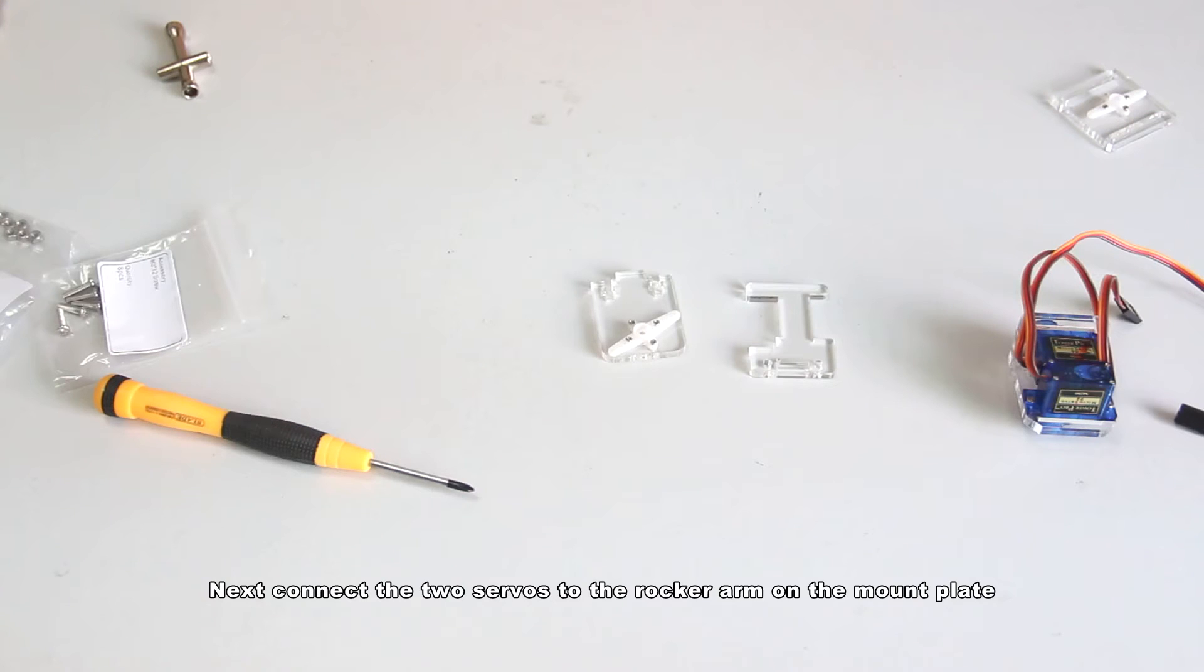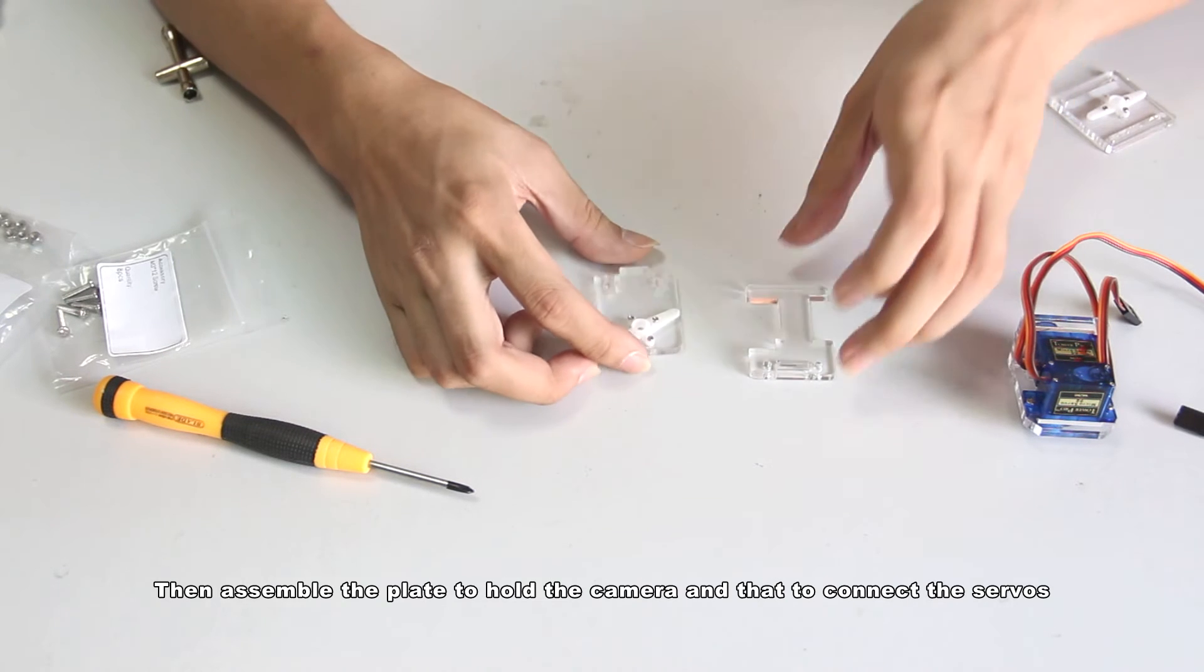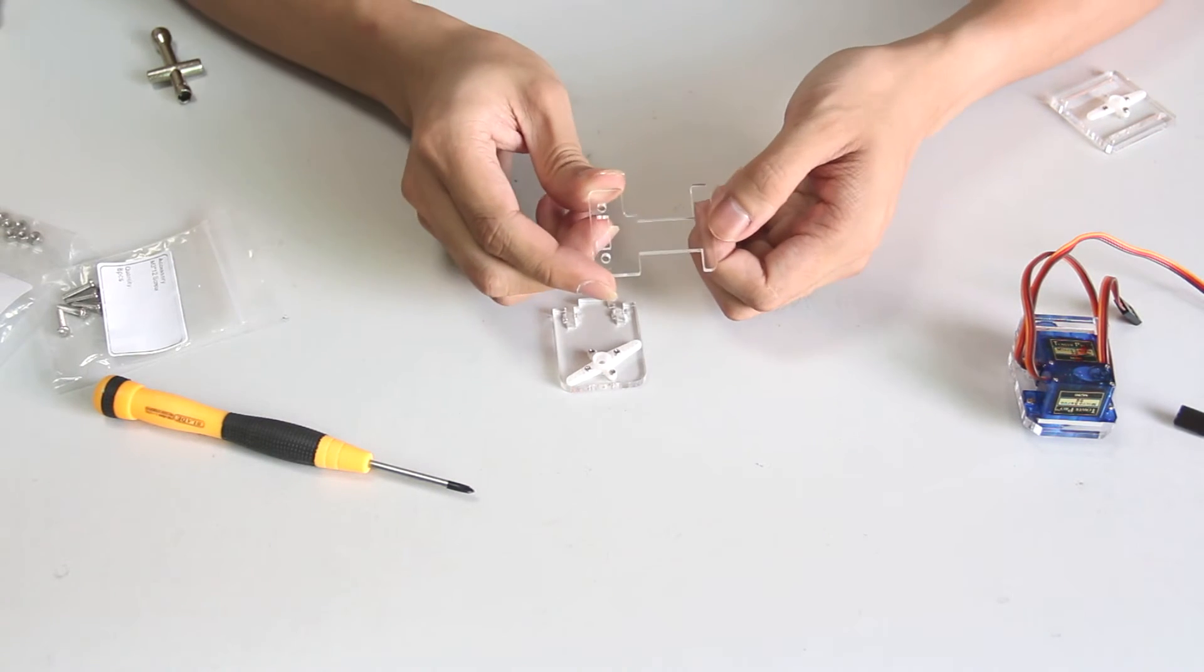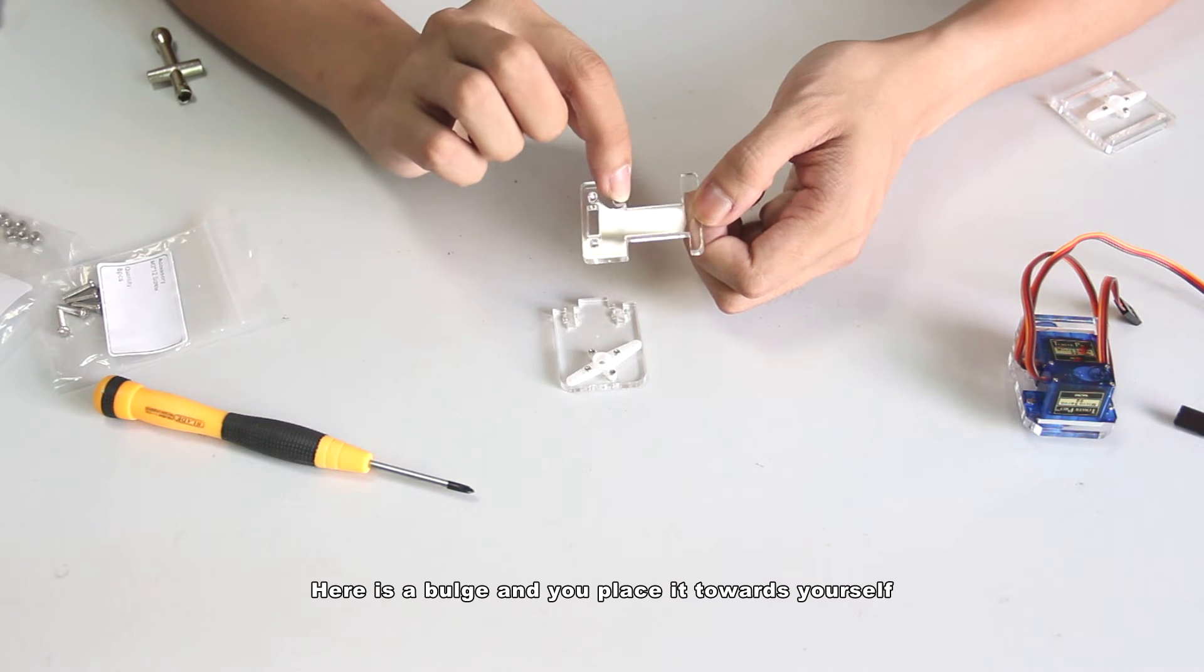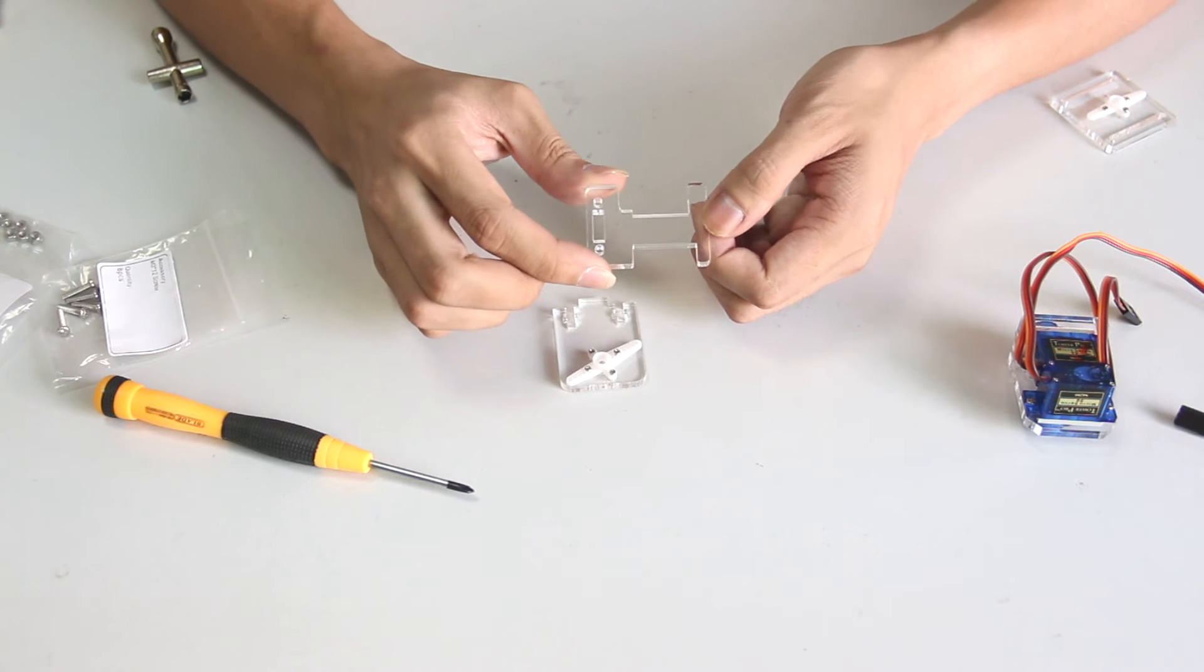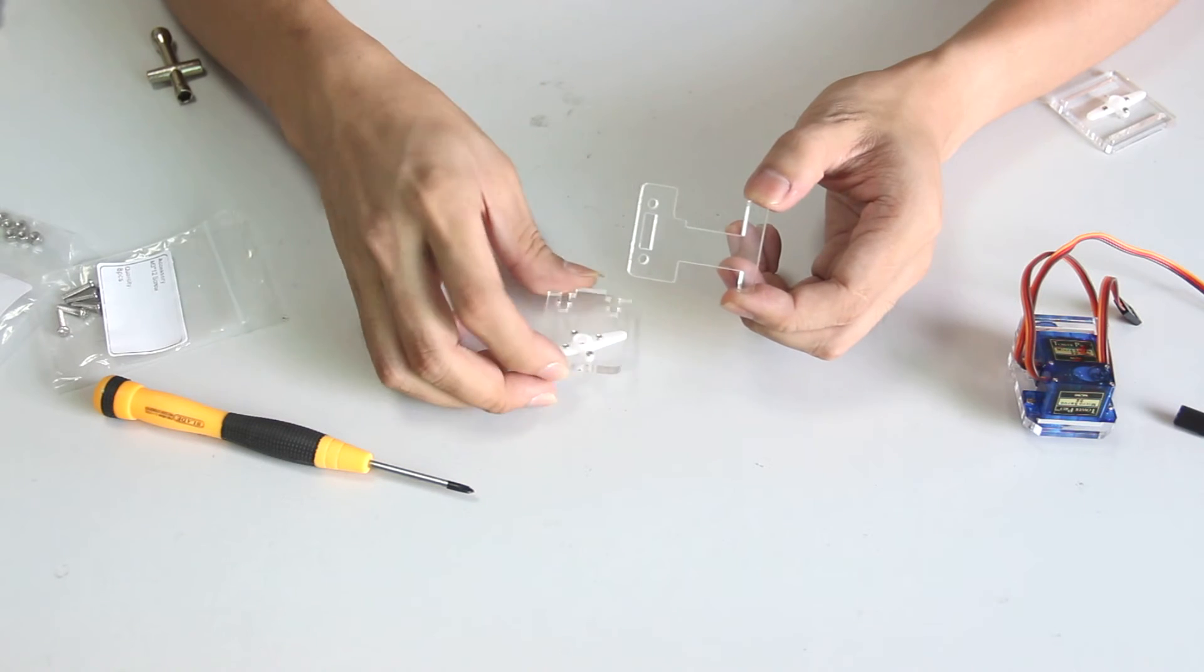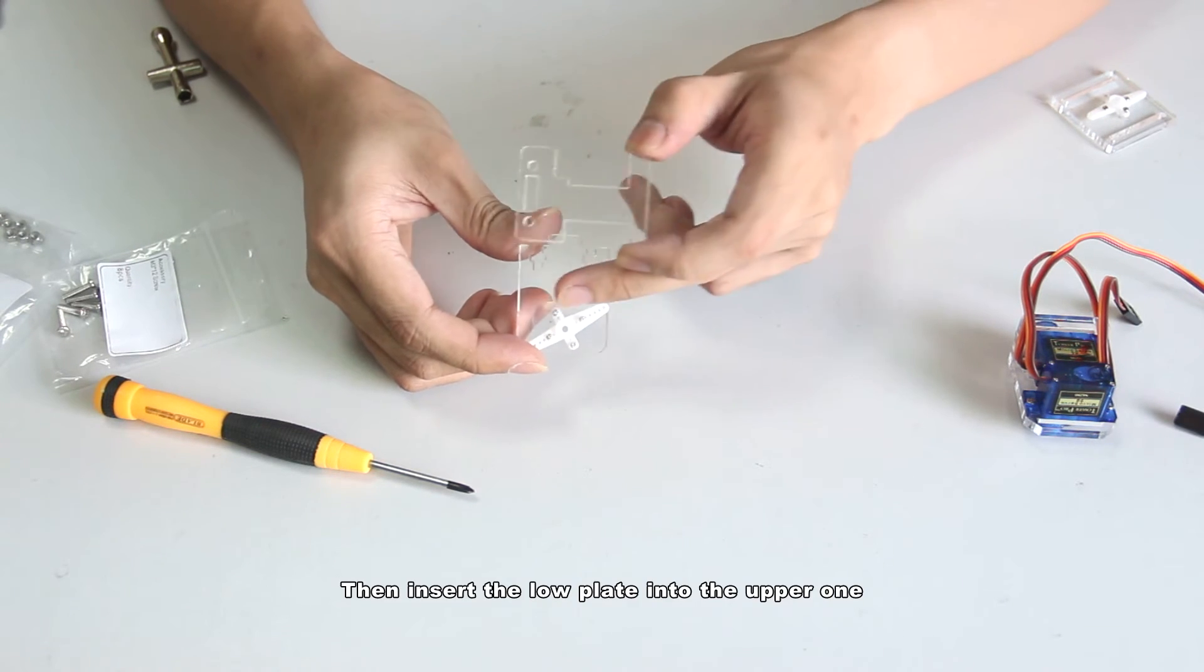Next connect the two servos to the rocker arms on the mount plates. Then assemble the plate to hold the camera and that to connect the servos. Pay attention to the direction. Here is the pouch and you place it towards yourself. And the upper longer end of the rocker arm towards yourself. Then insert the lower plate into the upper one.